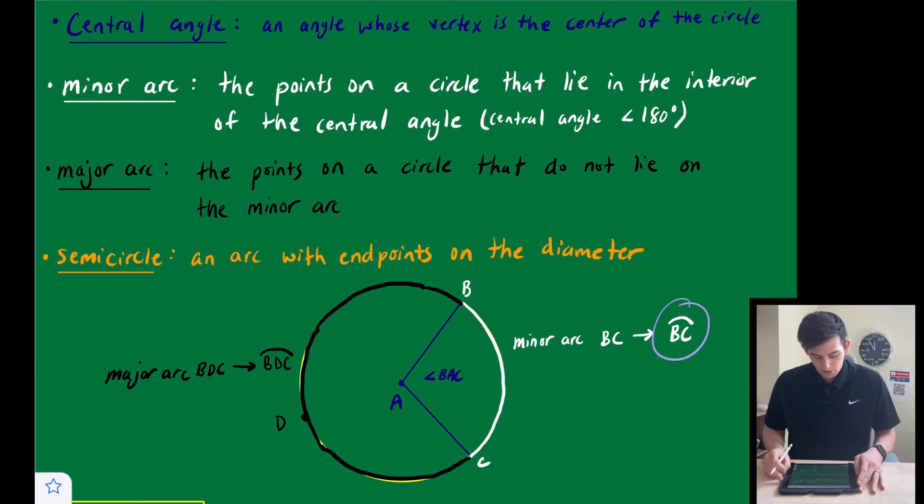And next in black we have the major arc. The major arc is just the points on a circle that do not lie on the minor arc. So if we have our minor arc in white, the remaining portion of our circle is in black, and that would be our major arc. We denote a major arc with three letters, BDC, and we put our arc over the top.